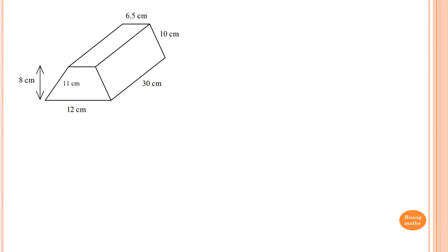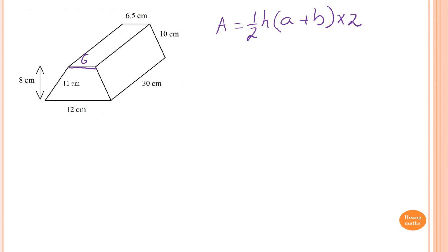To find the surface area of this solid, we know that the front and the back are the same, and it's a trapezium. The area of a trapezium is a half of height times A plus B. A is 6.5 cm, B is 12, and the perpendicular height H is 8 cm.